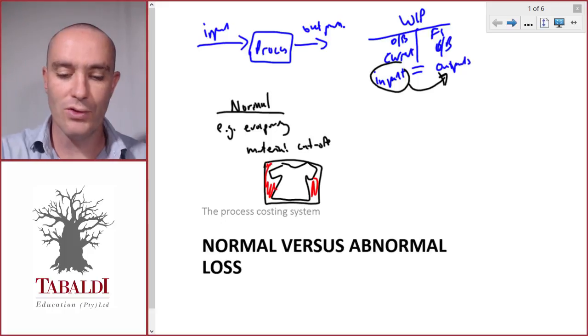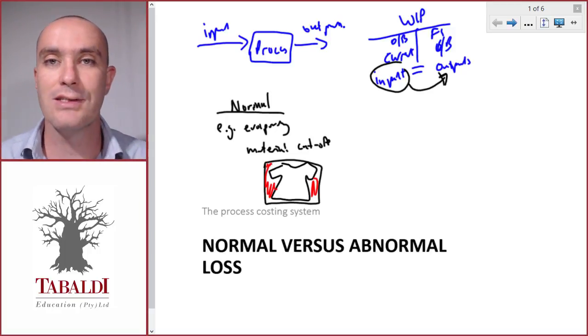It's already designed in such a way that we have minimal cut-offs, but it's unavoidable. If we have normal losses, it doesn't indicate that there's something wrong in the process.